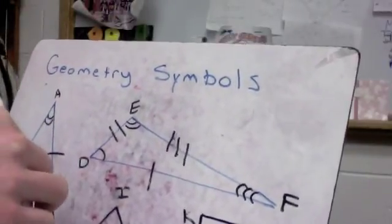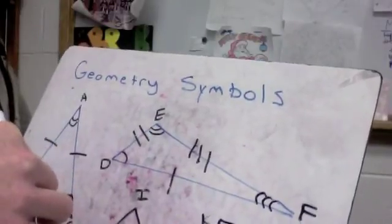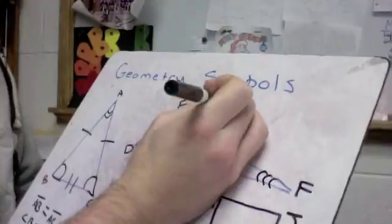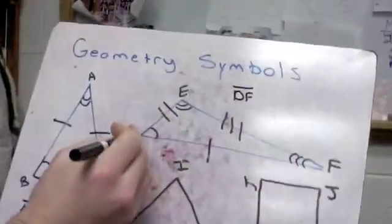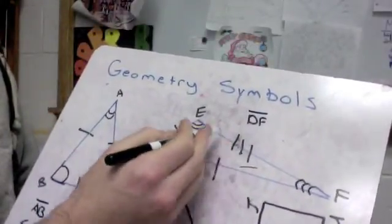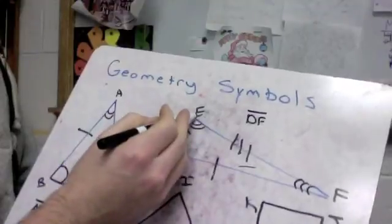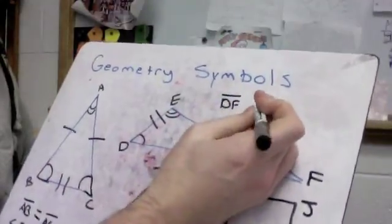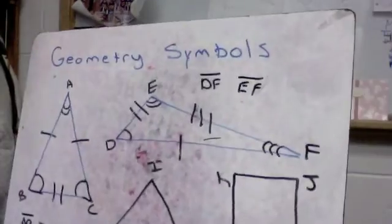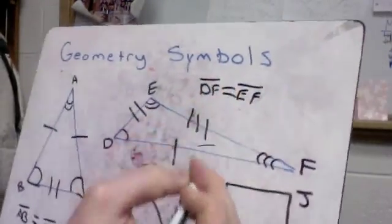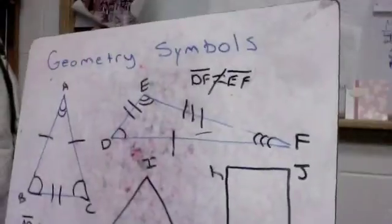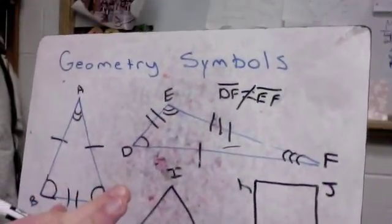Other things you might see here: it says that segment DF — which is just right here, D to F — is not equal to segment EF. How you would probably see this is they might put an equal sign in the middle with a slash through it. That just means not equal to.